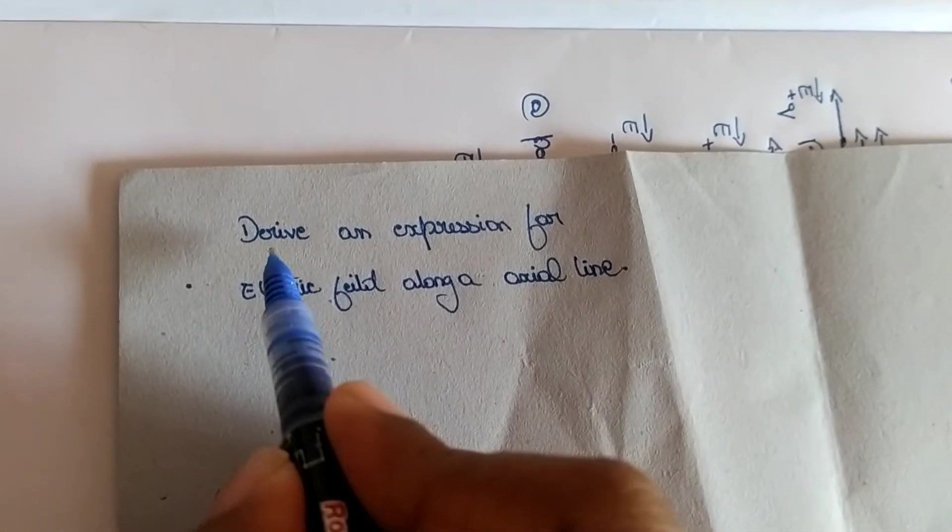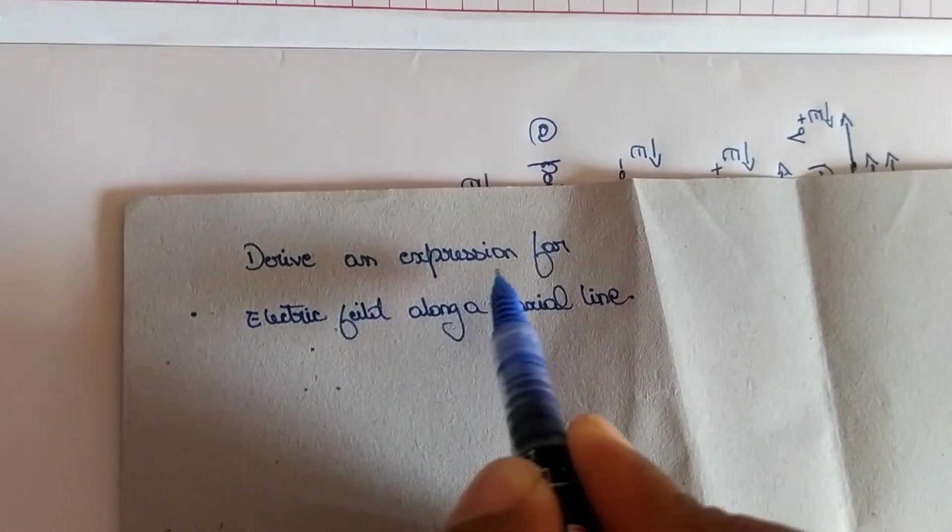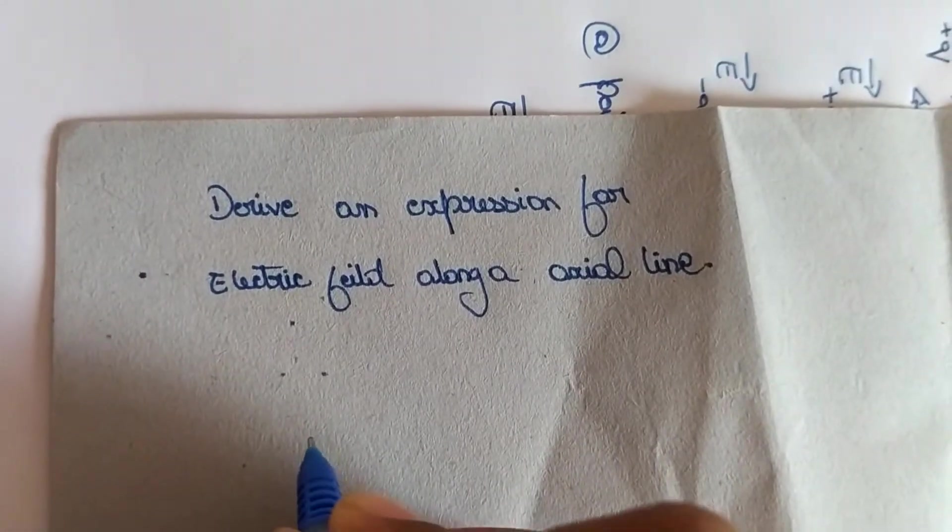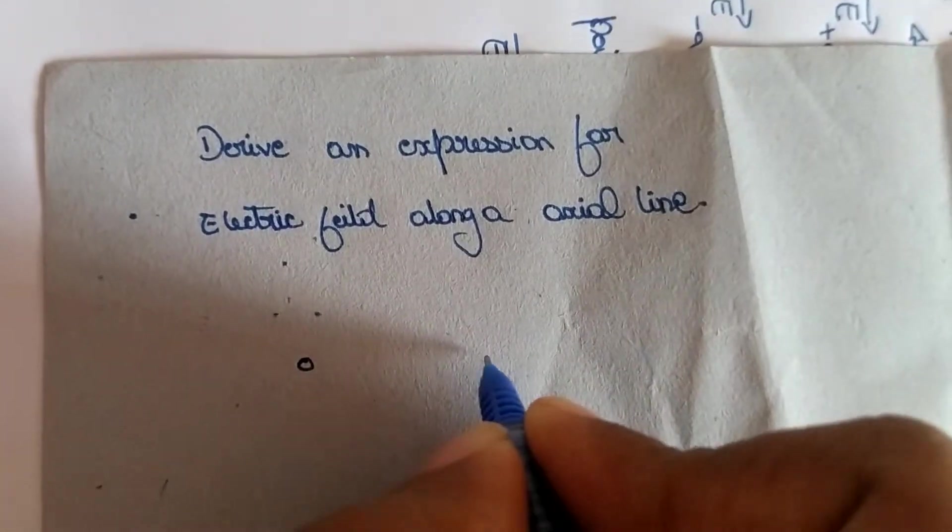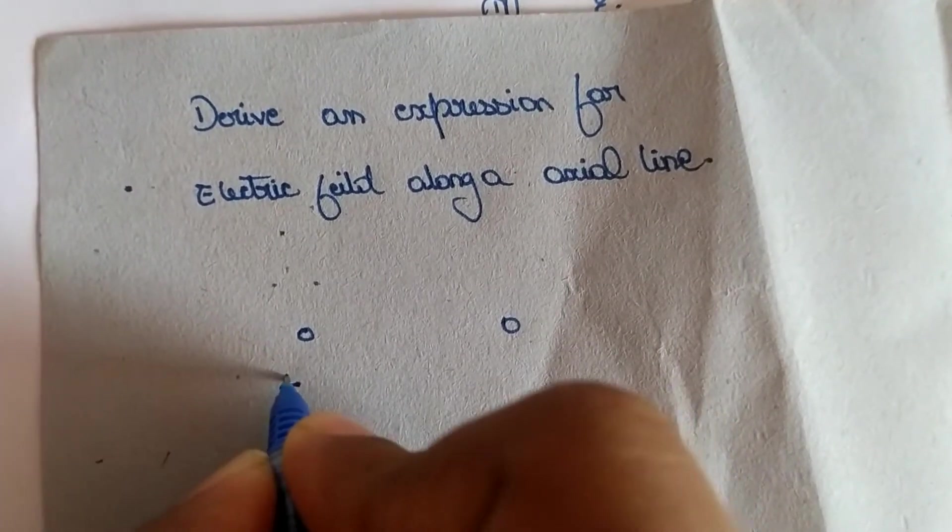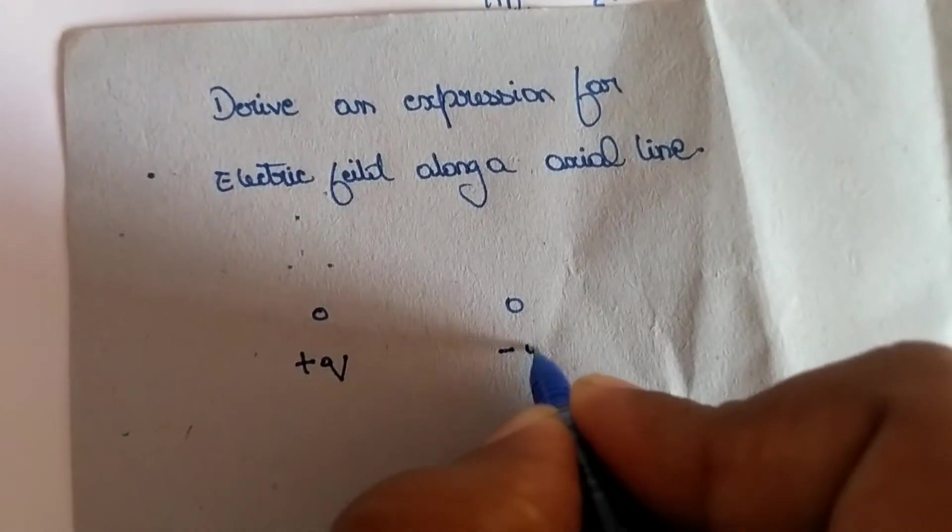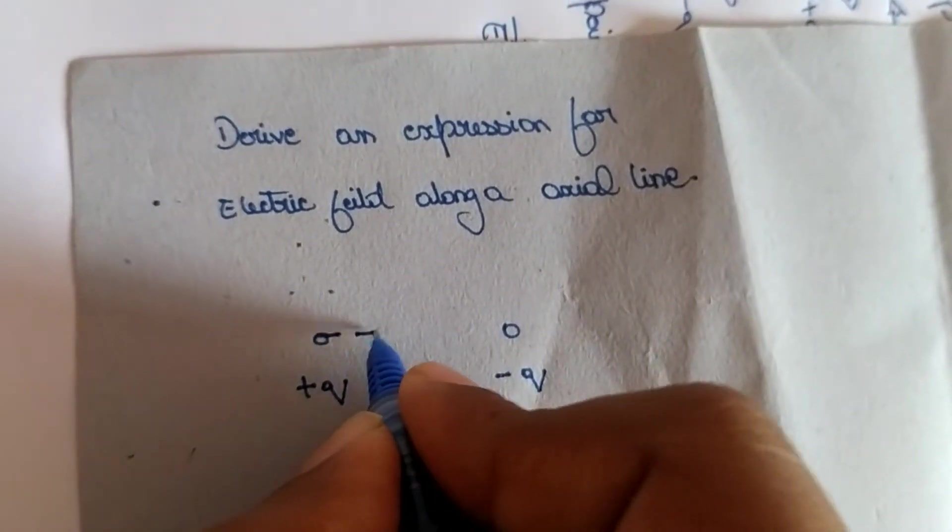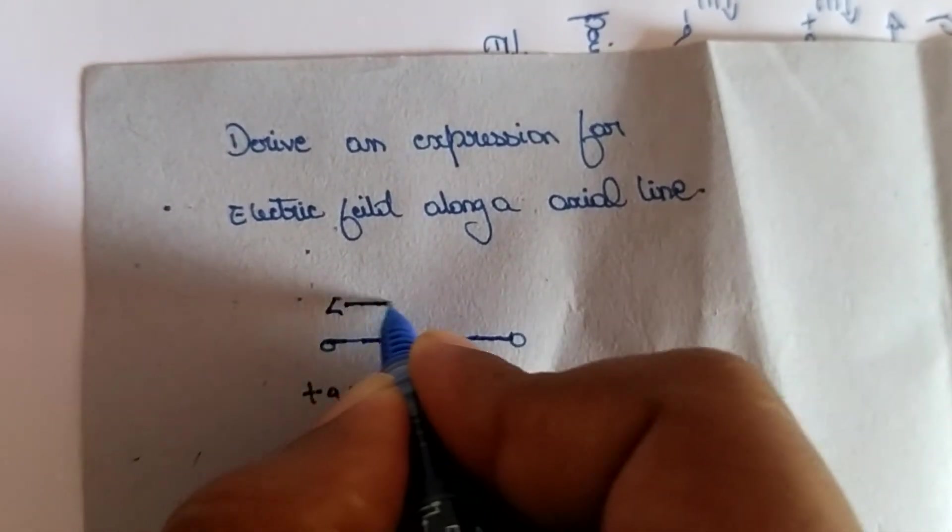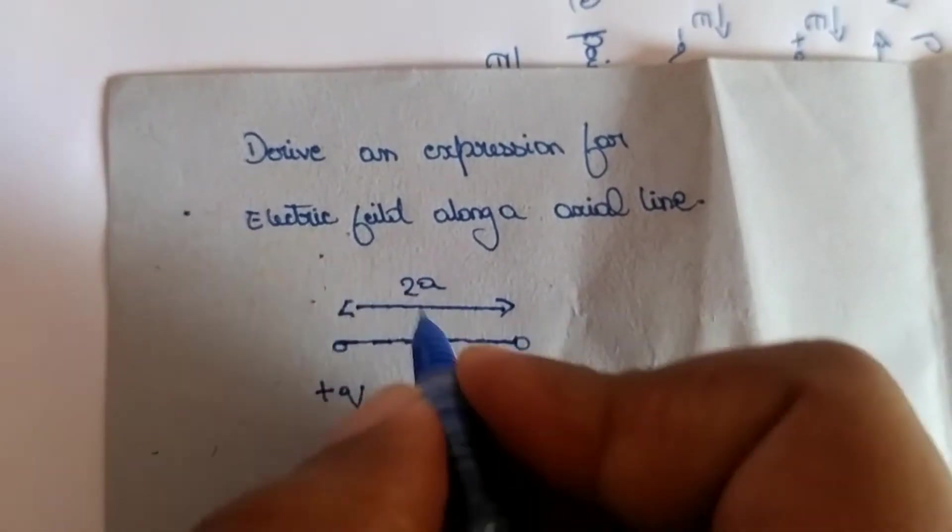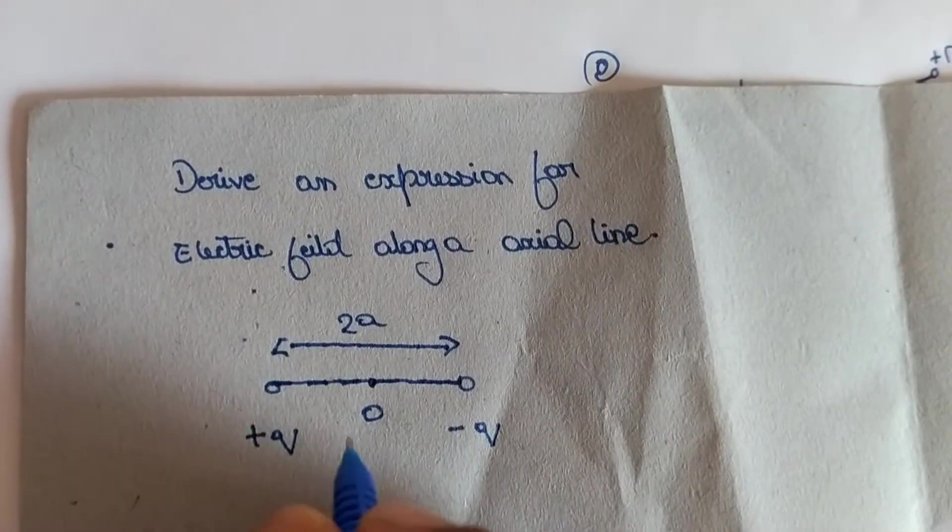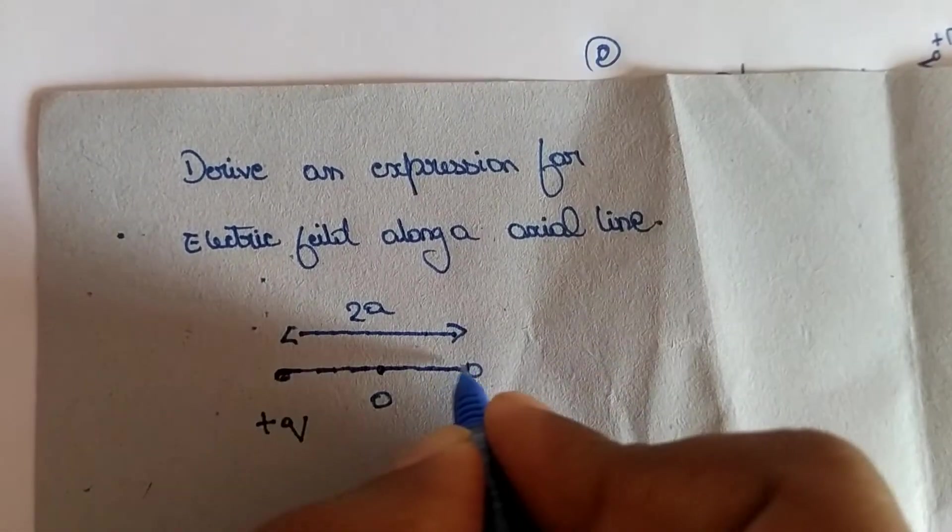Hello guys, today let us derive an expression for electric field along an axial line. For that we must consider a dipole system. Let this be the two charges of charge plus Q and minus Q separated by some distance.